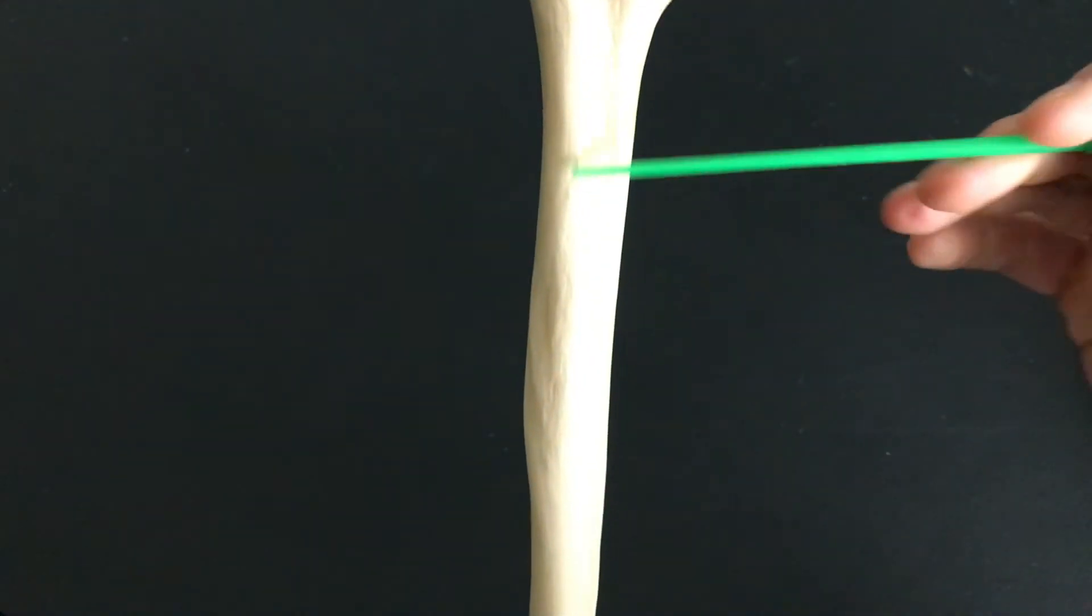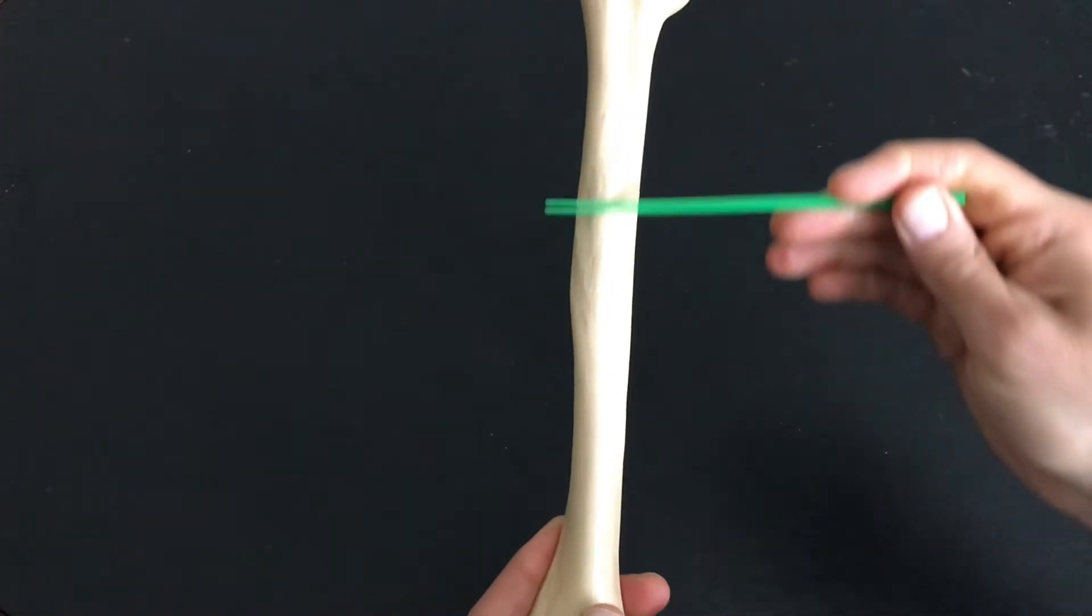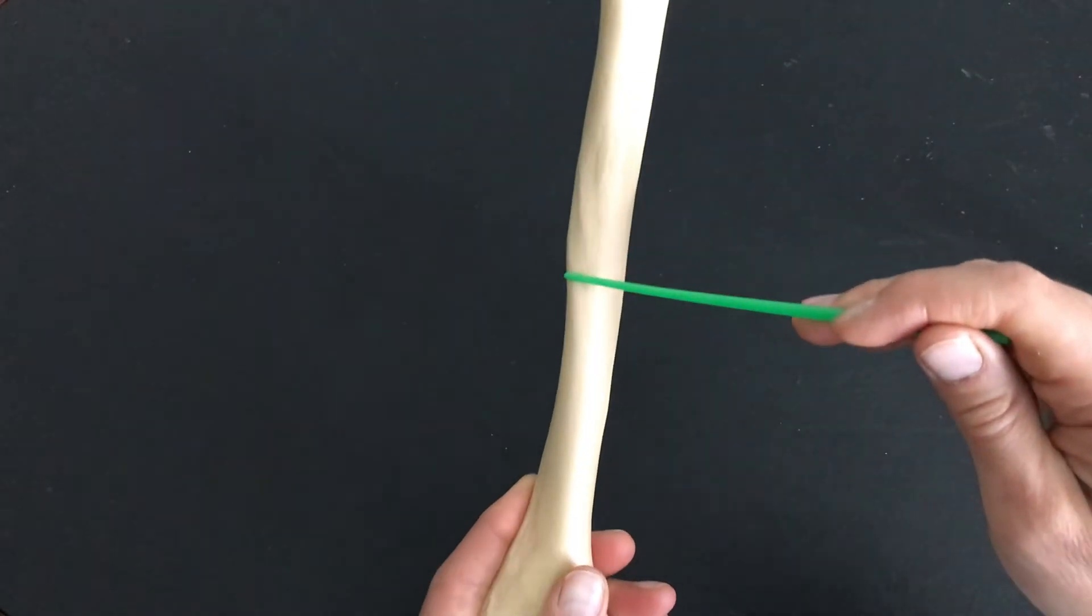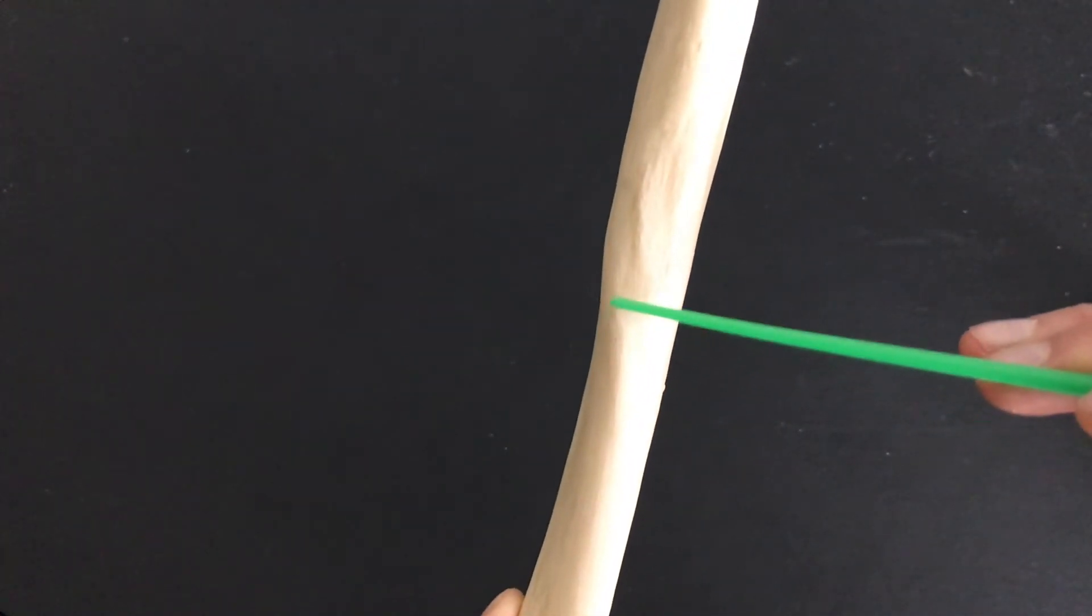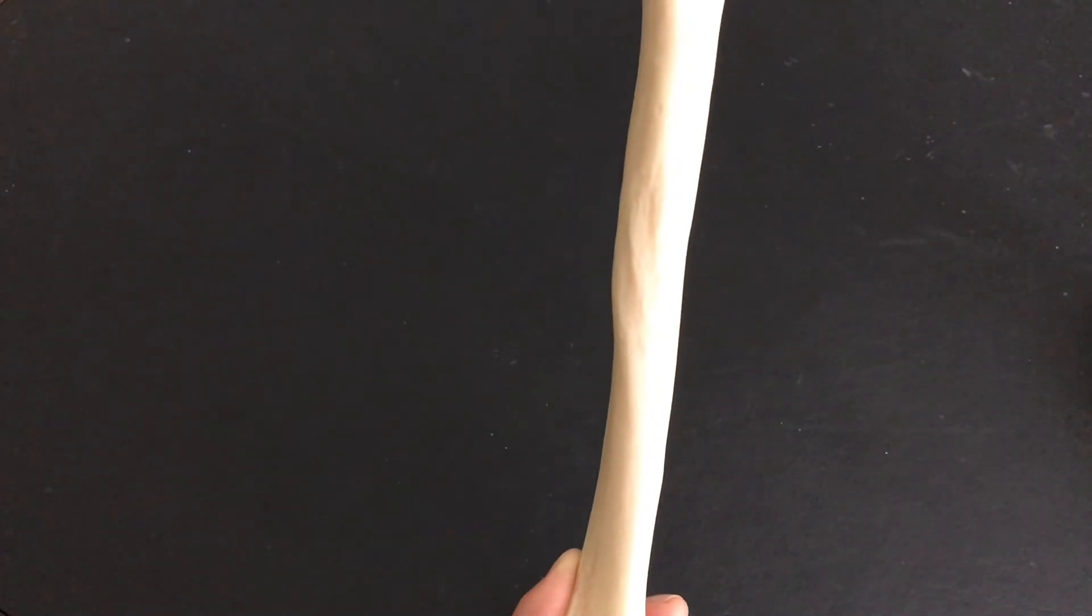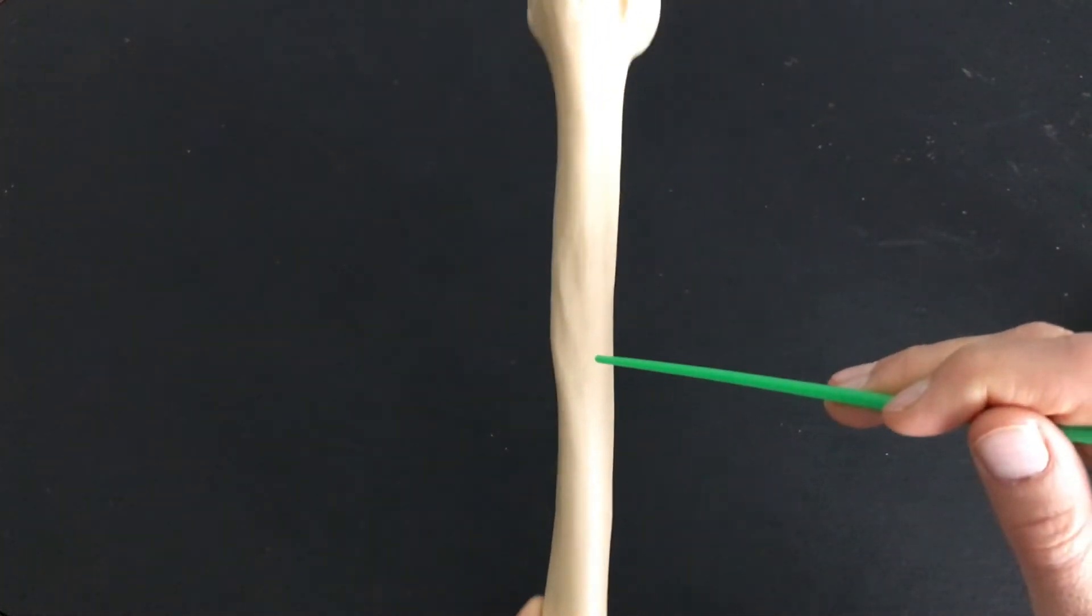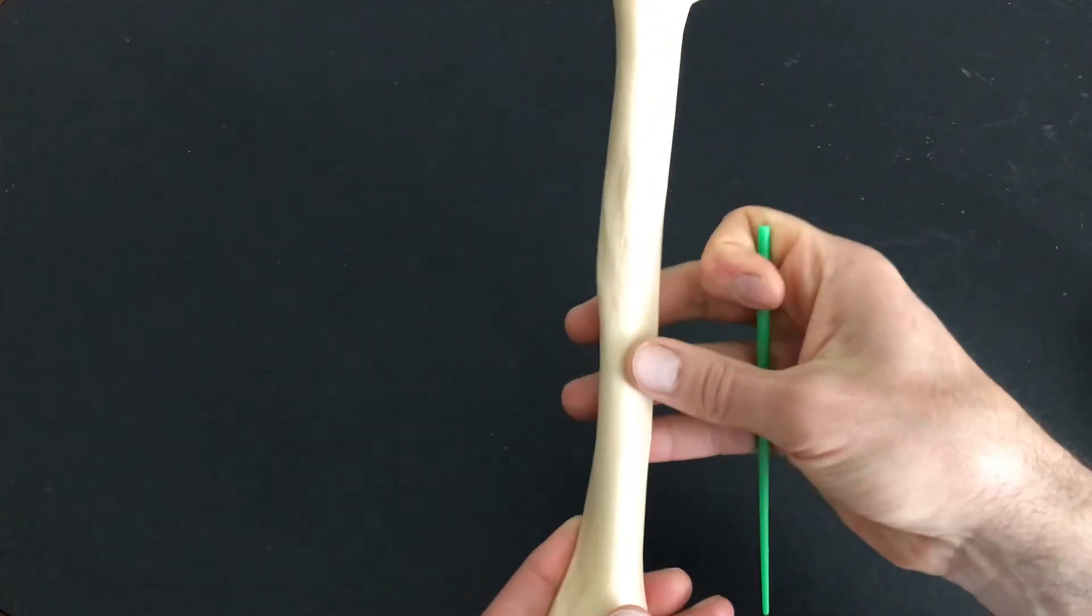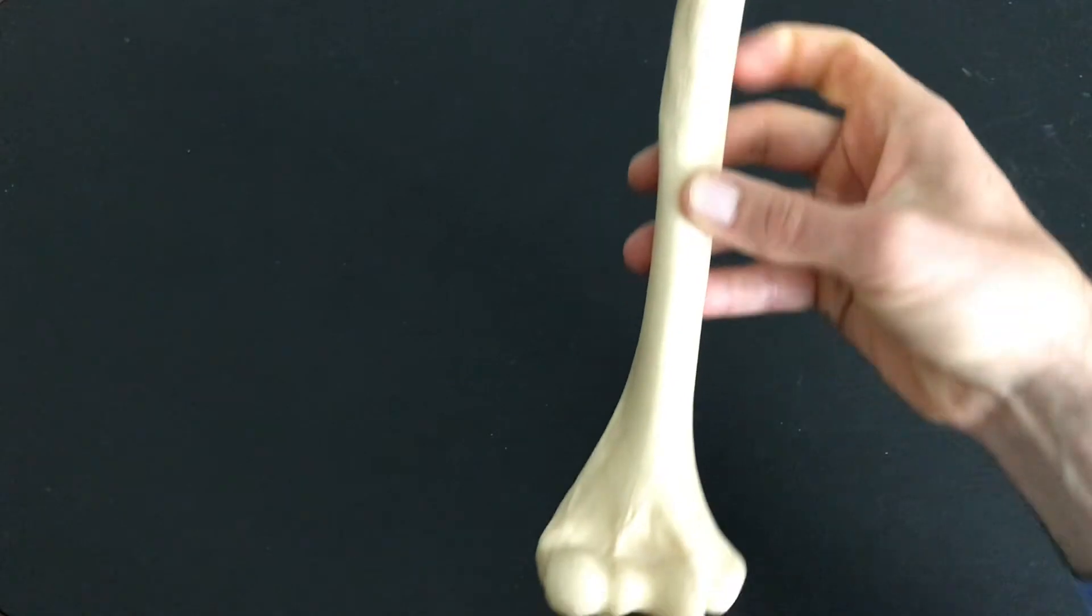From there we go down the diaphysis—the diaphysis is the shaft of the bone itself. And about halfway down you'll see a bump right here, that bump is your deltoid tuberosity. When you raise your arms out to the side laterally, like you're reaching for something out to the side, you're using your deltoid muscle. Your deltoid muscle is the muscle of your shoulder that's going to attach right here.